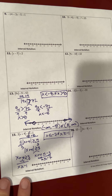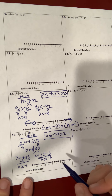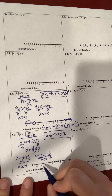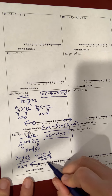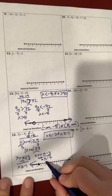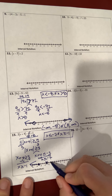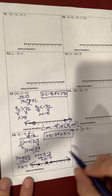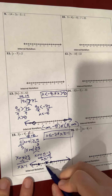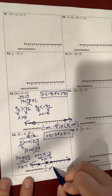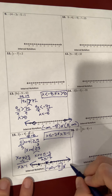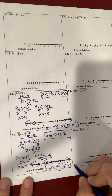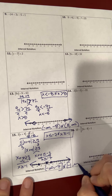When I graph, closed circle on negative 7, shade to the left. Closed circle on negative 1, shade to the right. My interval notation is negative infinity to negative 7 blocked off — don't forget the word or — negative 1 blocked to infinity.